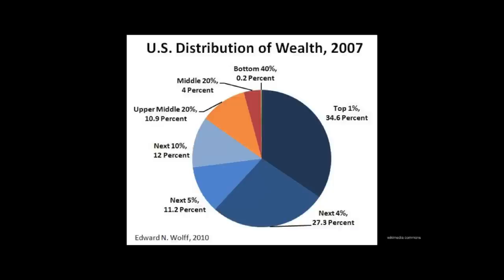So what does income inequality look like today? The top 1% own 35% of the wealth, and the top 20% own over 80% of the wealth. So clearly, there is wealth inequality — there's no doubt about that.